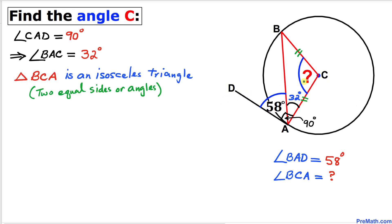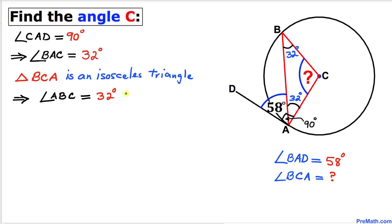Now let's focus on this triangle BCA. As we can see, AC and BC are its radii and they are equal in length, so therefore this triangle BCA is an isosceles triangle. Since this is an isosceles triangle, these base angles must be equal. So if this angle BAC is 32 degrees, this angle ABC has got to be 32 degrees as well.